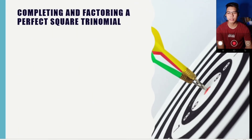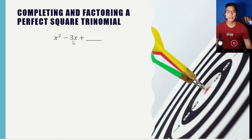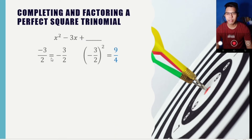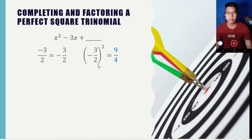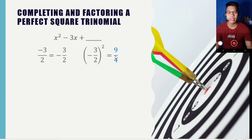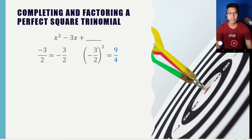Let's have another example. Suppose we are given x squared minus 3x plus blank. This time the numerical coefficient of the middle term is not divisible by 2, so we still divide it by 2, resulting in negative 3 over 2. We then square that quotient: the sign becomes positive, we square the numerator and denominator — 3 squared is 9, 2 squared is 4 — giving us 9 over 4.